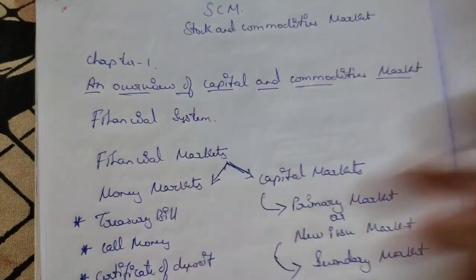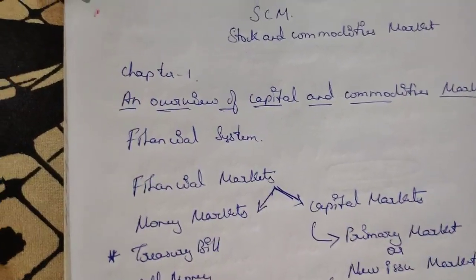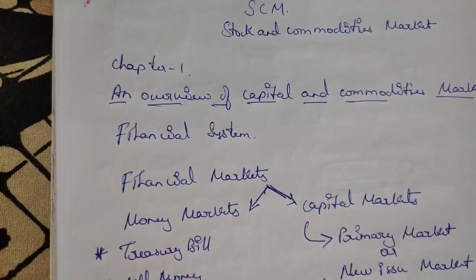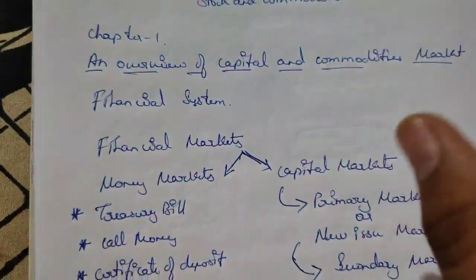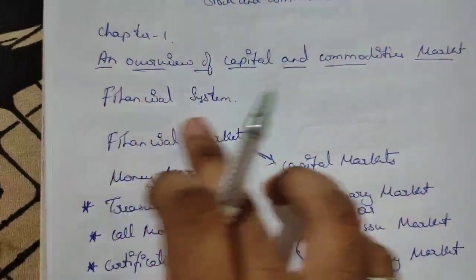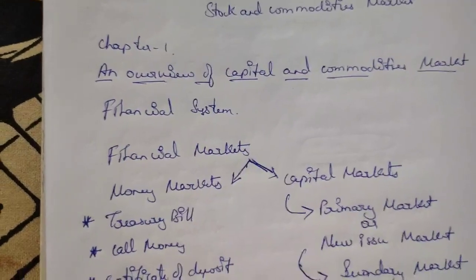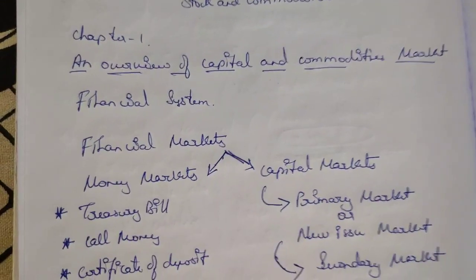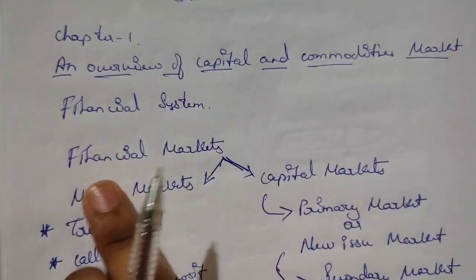First we should know what is a financial system. A financial system refers to something that allows the exchange of funds between lenders, borrowers, and investors. It is a financial institution which makes available the exchange of funds between lenders, borrowers, and many other people.